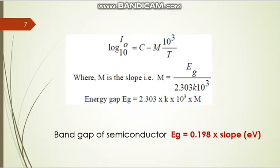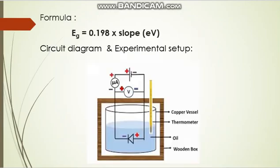From the slope of that straight line, we can find the energy gap. The band gap of the semiconductor is: Eg = 0.198 × slope (after simplification). That is the formula we are using here.